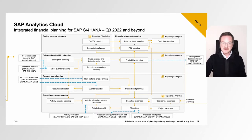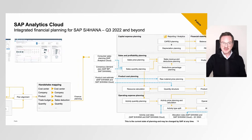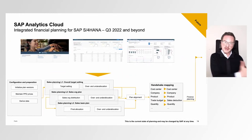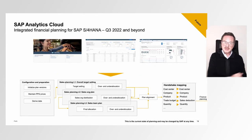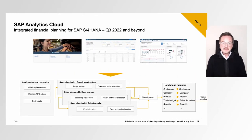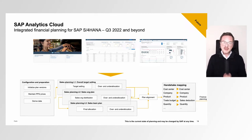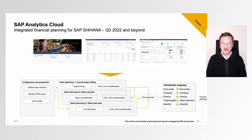Here it doesn't end. We also have a content package available directly for an operational sales plan, which is available alongside other content packages on our ACN — the Analytics Content Network.